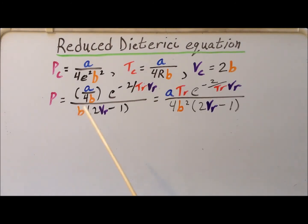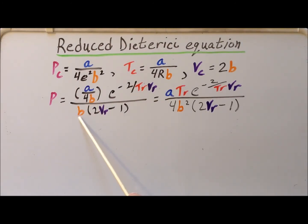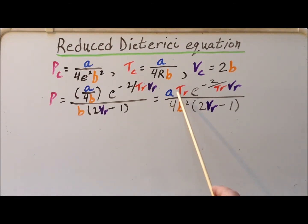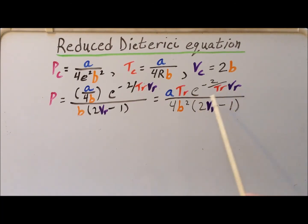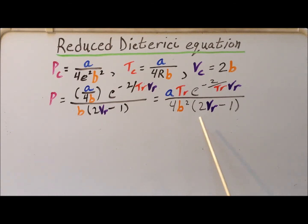Then we can combine the 4B in the denominator with the remaining B, making the slightly simpler expression: A times T sub R times e to the minus 2 divided by T sub R V sub R, all divided by 4B² times the quantity 2V sub R minus 1. We've now made substitutions for the critical temperature and for the volume.